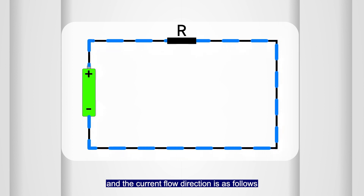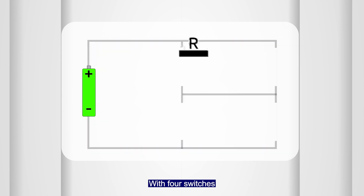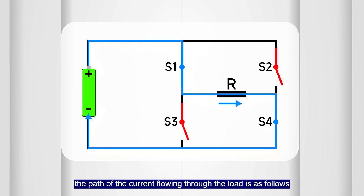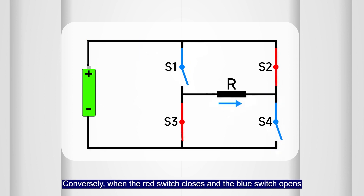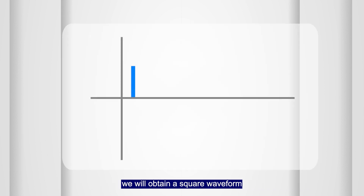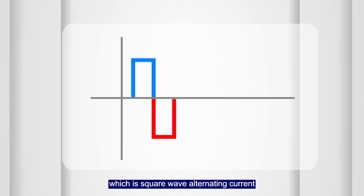With four switches, when the blue switch closes and the red switch opens, the path of the current flowing through the load is as follows. Conversely, when the red switch closes and the blue switch opens, the current path will also be reversed. Based on this, we obtain a square waveform — square wave alternating current.